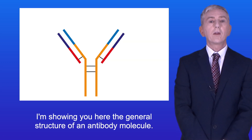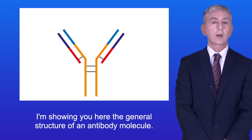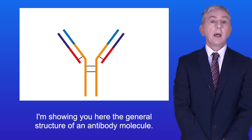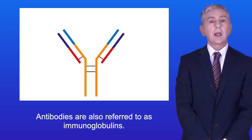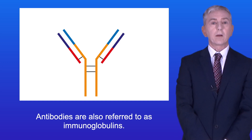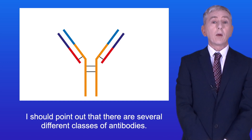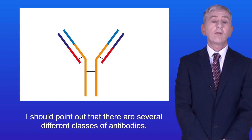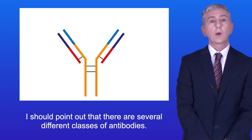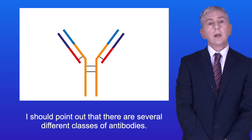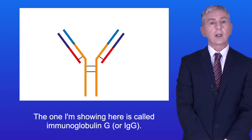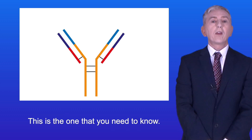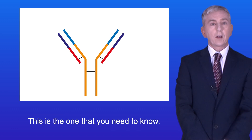Here is the general structure of an antibody molecule. Antibodies are also referred to as immunoglobulins. There are several different classes of antibodies; the one shown here is called immunoglobulin G, or IgG, and this is one that you need to know.